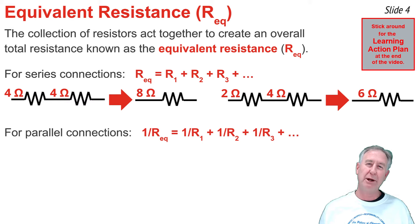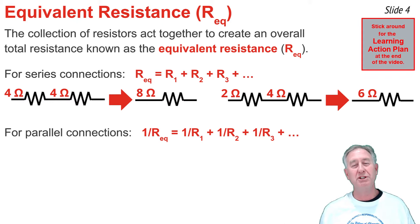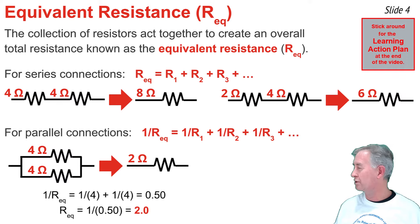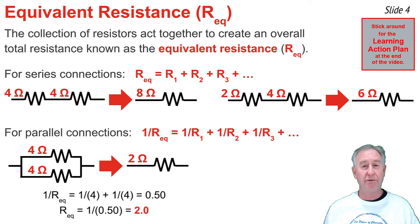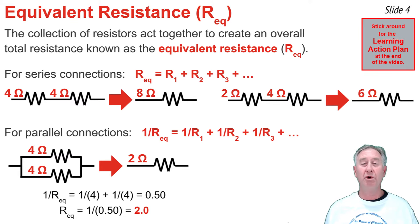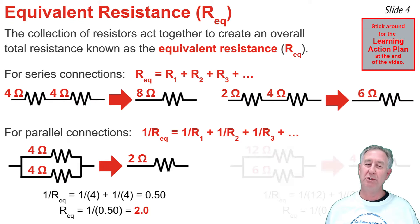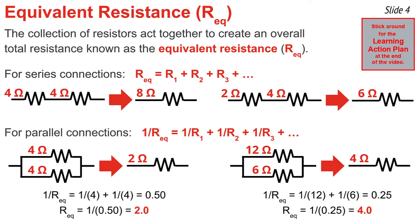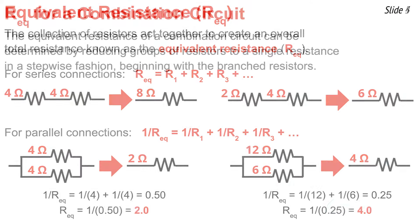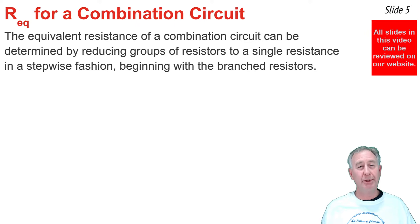It's a bit more complicated for parallel connected resistors. The equation requires you to sum the reciprocals of all resistance values in parallel, then take the reciprocal of that sum to get R-EQ. For example, two 4-ohm resistors in parallel: 1/4 plus 1/4 equals 0.50, and the reciprocal of 0.50 is 2.0 ohms. For 12 ohms and 6 ohms in parallel: 1/12 plus 1/6 equals 0.25, and the reciprocal of 0.25 is 4 ohms.